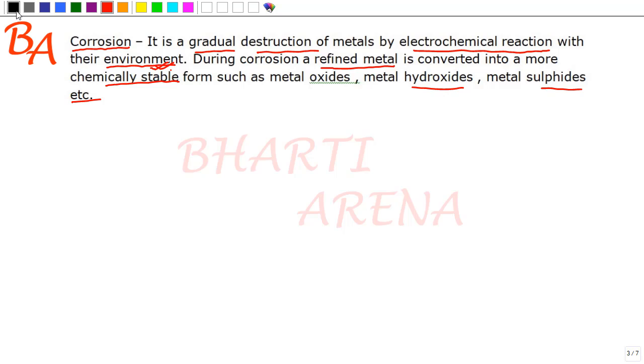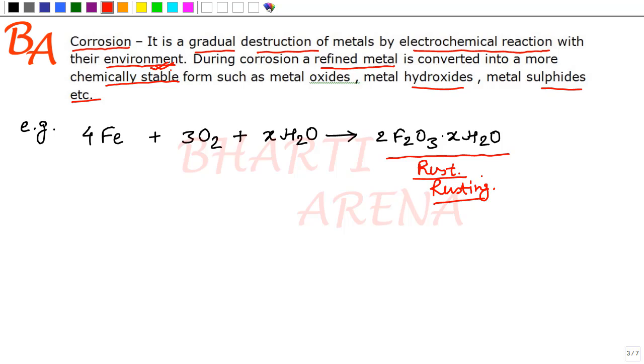Now we will see an example of this one that is of corrosion. A very common example is there. Iron plus oxygen plus water in excess gives iron oxide XH2O. This is the oxide form. This is known as rust. And this is the reason why we call it rusting. Such reactions are called rusting due to the formation of this rust.